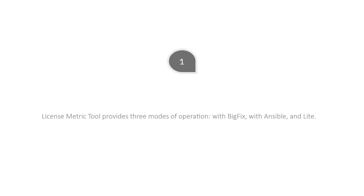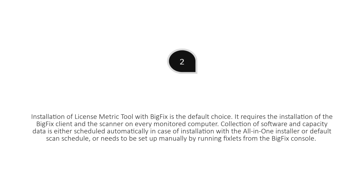Here's the takeaway. 1. LicenseMetricTool provides three modes of operation: with BigFix, with Ansible, and Lite. 2. Installation of LicenseMetricTool with BigFix is the default choice. It requires the installation of the BigFix client and the scanner on every monitored computer. Collection of software and capacity data is either scheduled automatically in case of installation with the all-in-one installer or default scan schedule, or needs to be set up manually by running fixlets from the BigFix console.